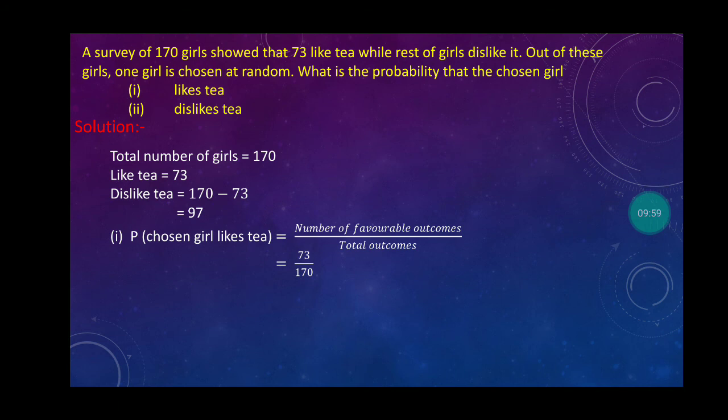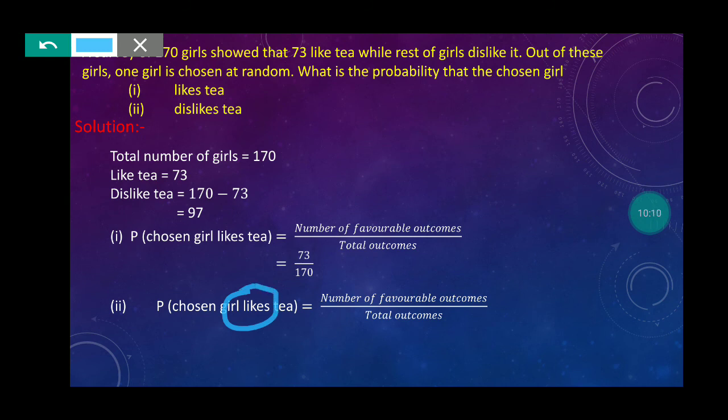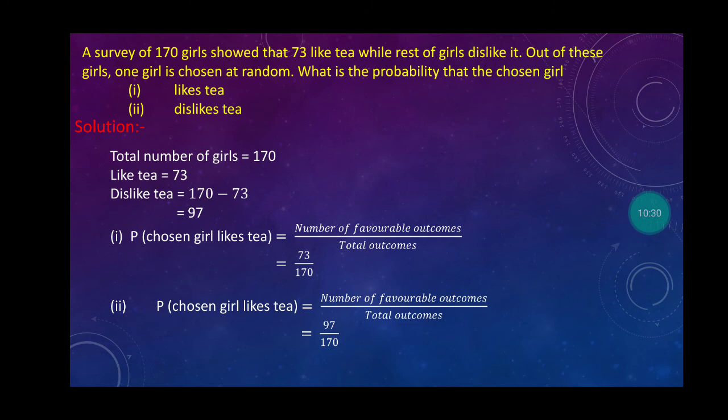Second point, dislike tea. By chance, by mistake, like tea was written where dislike tea should be. Dislike tea. That means how many girls dislike tea? 97. So we write 97 upon 170. This is simple, the same pattern. Students who have any query or problem in any question can call me on my number. Note carefully, there's a mistake here: where like tea is written, it should be dislike tea.